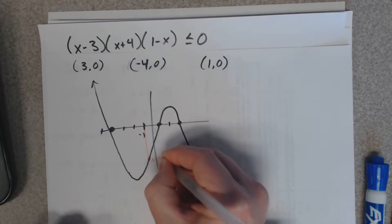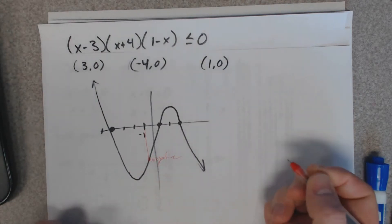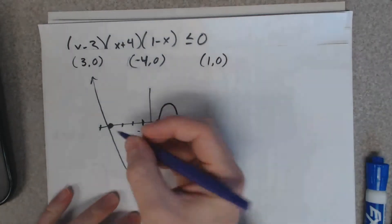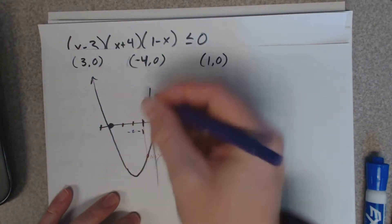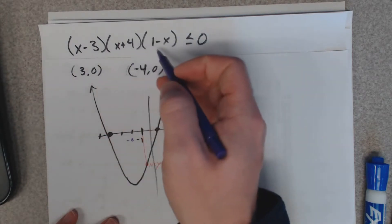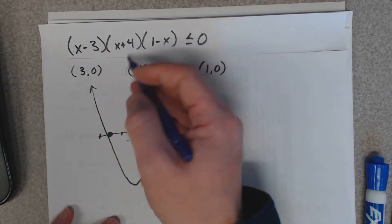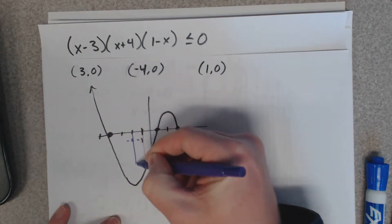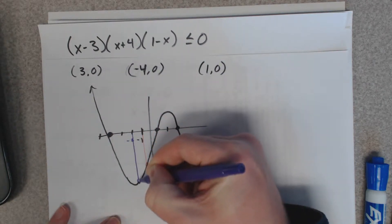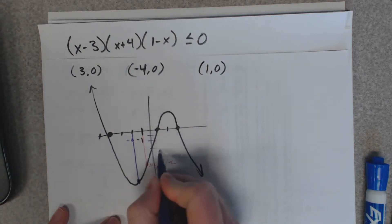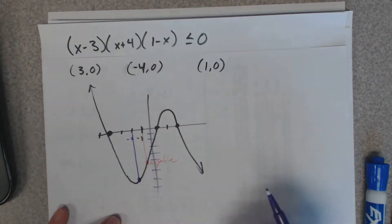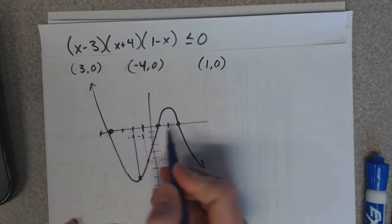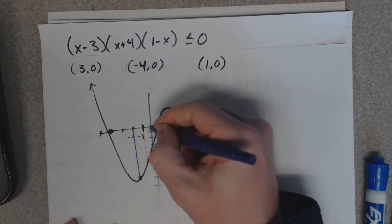If you plug a negative 2 in for x, I'm not for sure what actual value you get here, but I do know since the graph is down here that the y value is negative. Remember, all these values here, the y values, they're all negative y values.